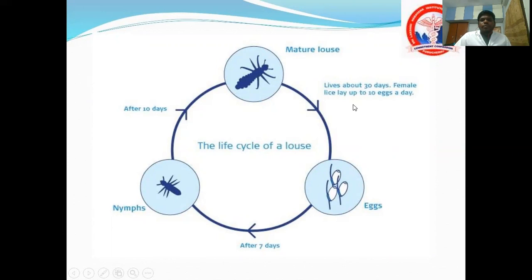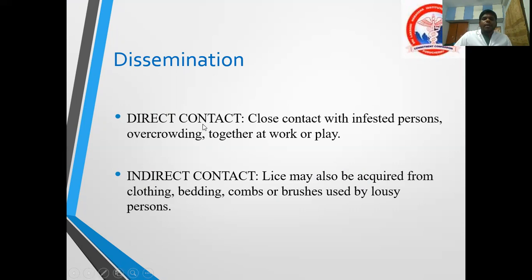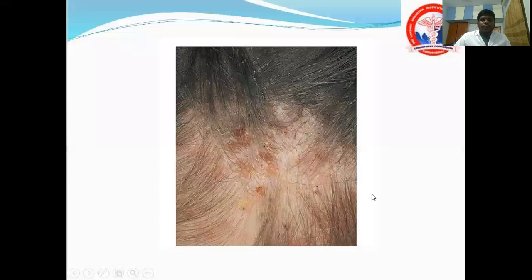Looking at the life cycle again: eggs hatch after seven days into nymphs, then after another seven days become mature adults. Transmission is by direct close contact with an infected person, overcrowding in workplace or play areas, and indirect spread through sharing clothing, bedding, combs, and brushes used by another person.